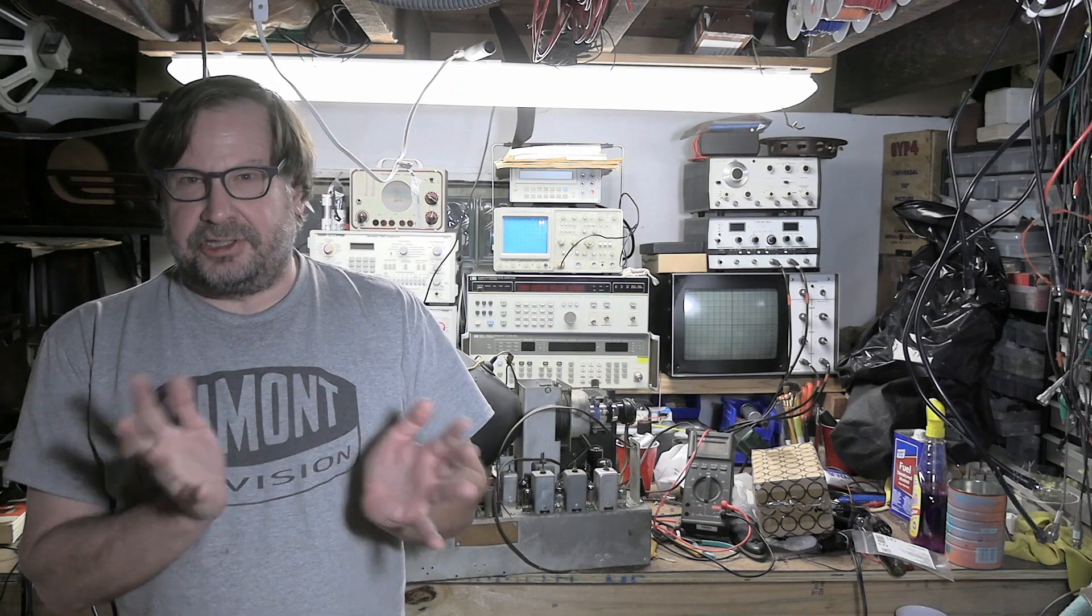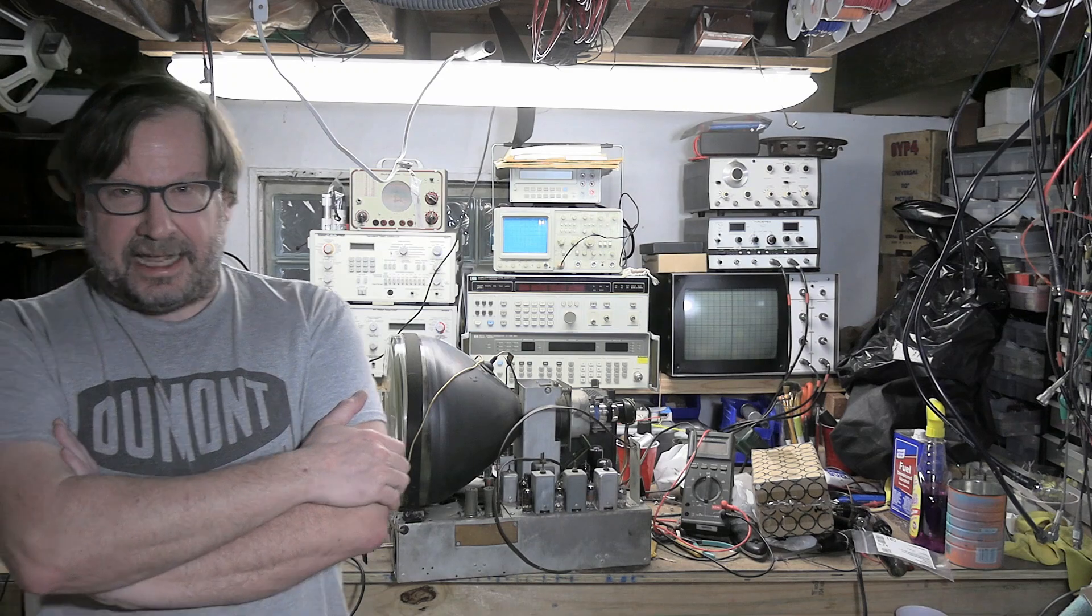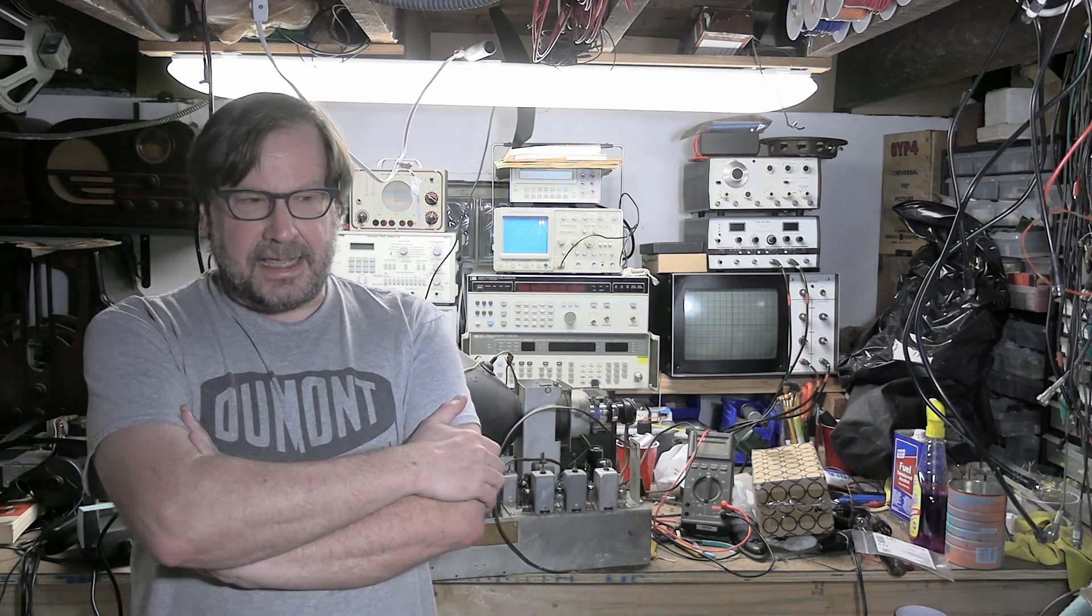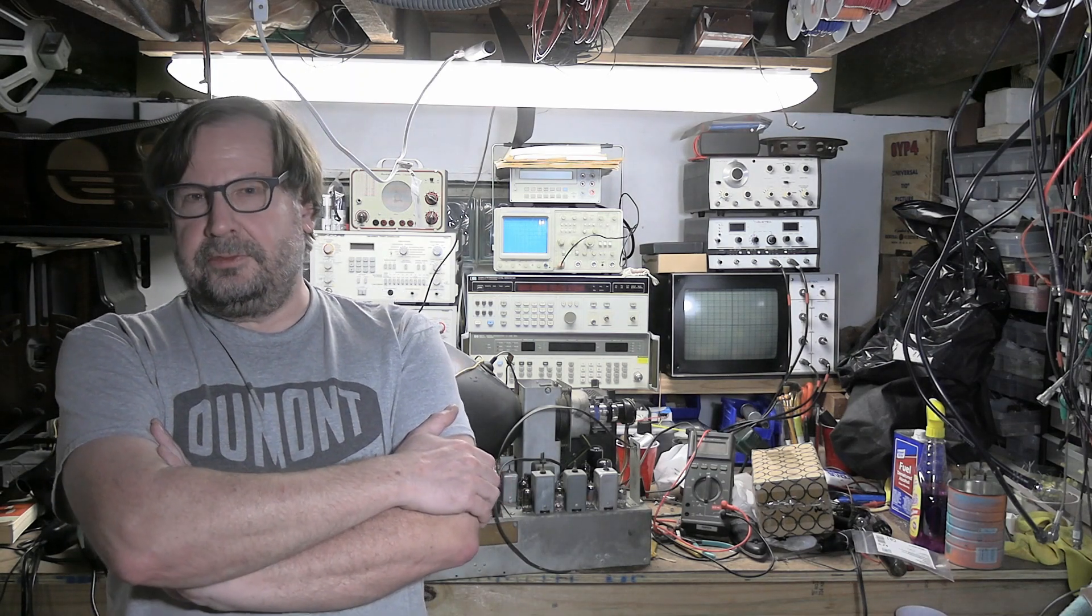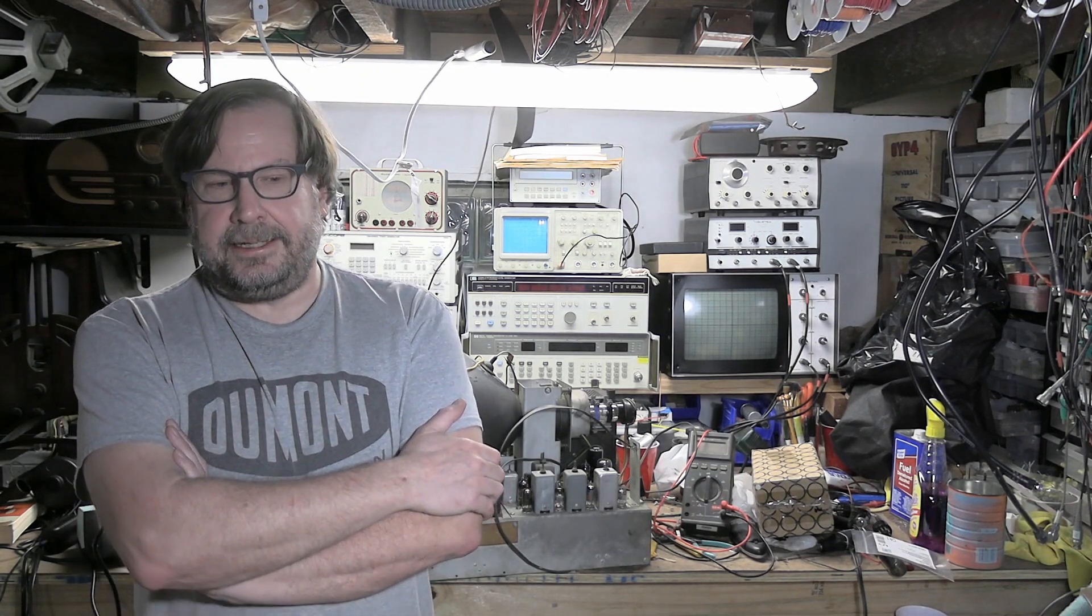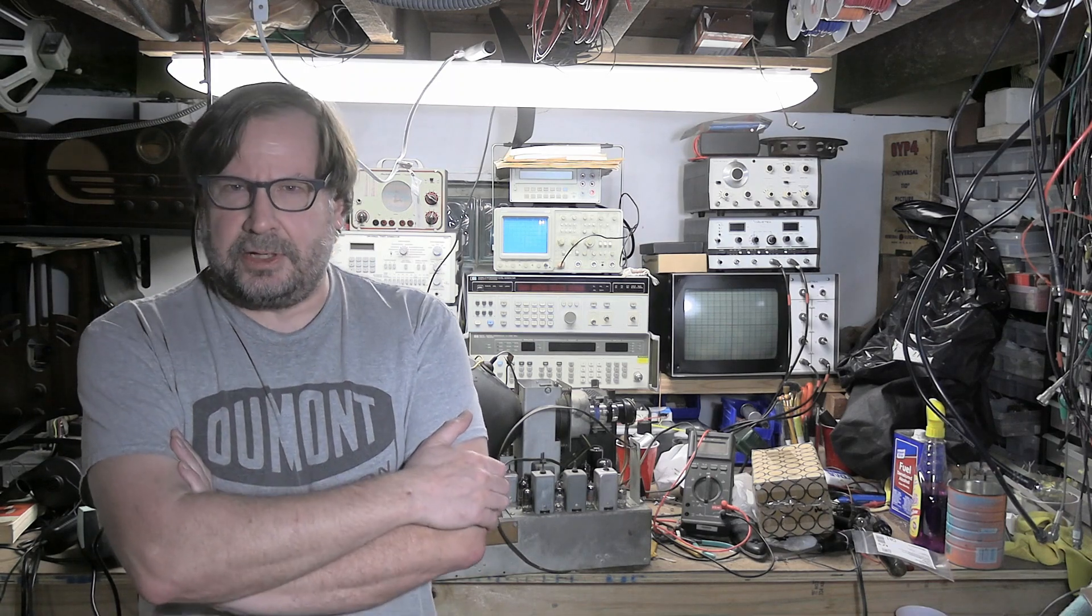Now, Tektronix probes, if you want the real deal, good condition, unused, they can cost a few hundred bucks easily. And a times 100 probe, which is what I want, divides the input voltage by 100, rather than the usual input probe, which divides it by 10. Those are less common and can be pretty darn pricey, too. I found a few of them on eBay, and the really nice ones with the instructions and the pouch were about $195, I think. But somebody had some used, untested ones for $10, $15. So I bought one of those, and I thought we'd give it a try.